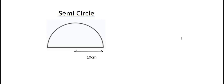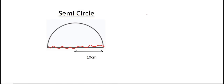Now we're going to look at semicircles. A semicircle is the same as a half circle. We're going to work out the perimeter — you can call it circumference or perimeter; because it has a straight piece, I'm just going to call it the perimeter.